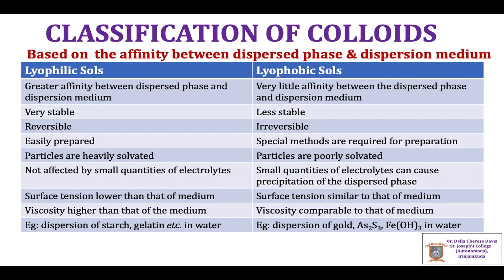The next classification is based on the affinity between the dispersed phase and the dispersion medium. A colloidal dispersion in which the dispersed phase is a solid and the dispersion medium is a liquid is called a sol. Examples include colloidal dispersions of starch, gelatin, and gold in water. Sols can be broadly classified into lyophilic sols and lyophobic sols depending on the affinity between the dispersed phase (solid) and the dispersion medium (liquid).